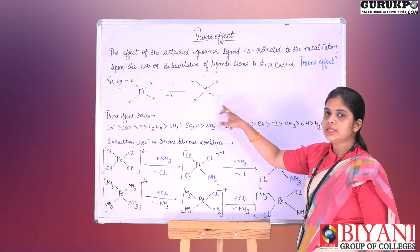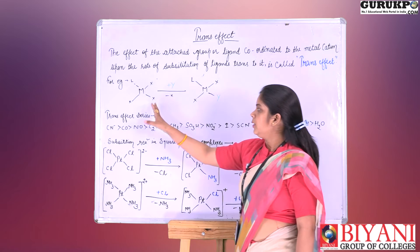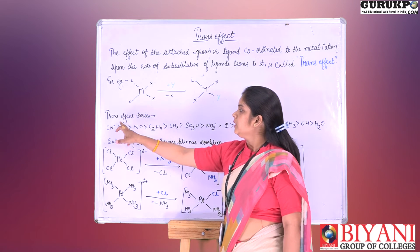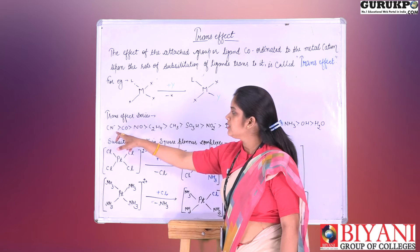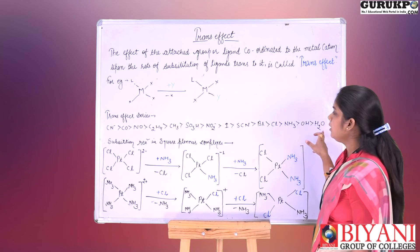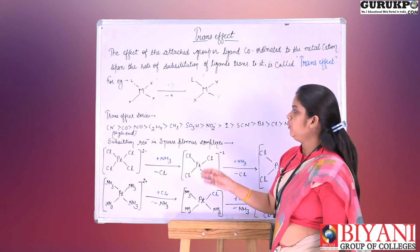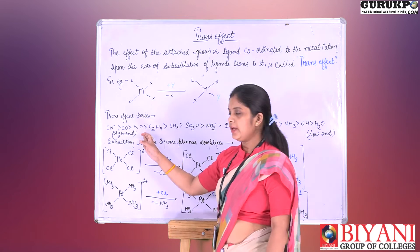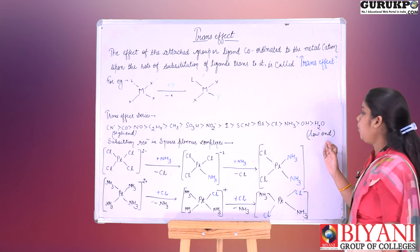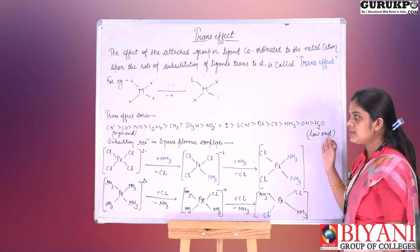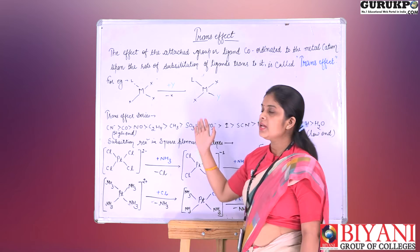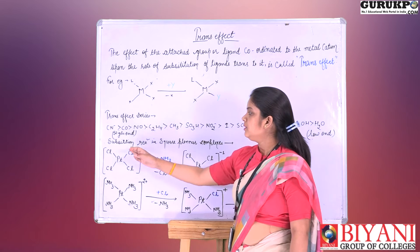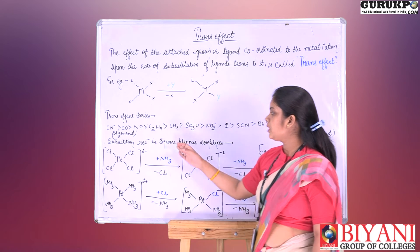We then get the final product. Now let's look at the trans effect series. This is the trans effect series, which explains which ligand has a higher trans effect. This is the high end and this is the low end of the series.